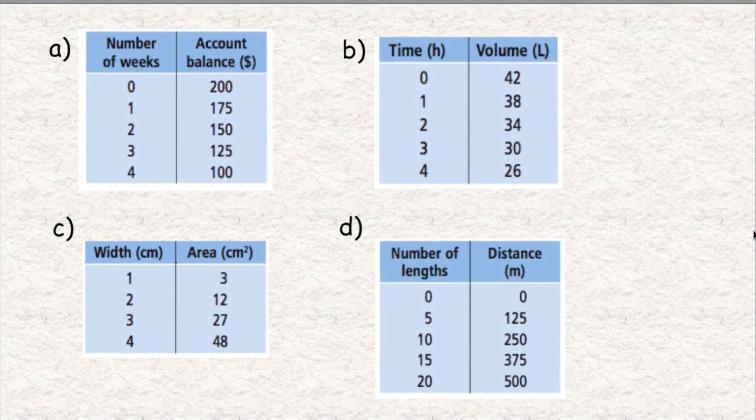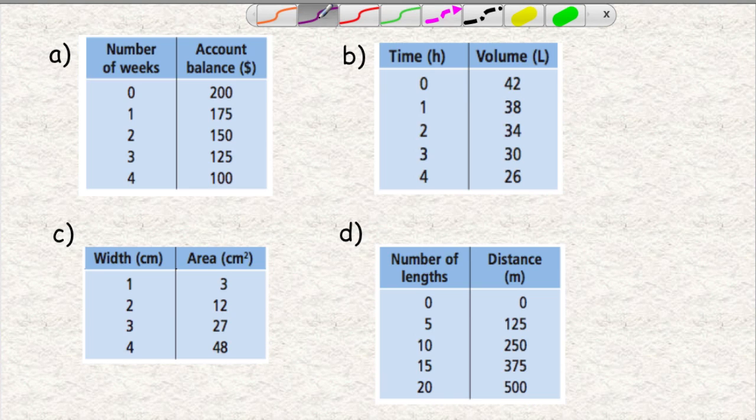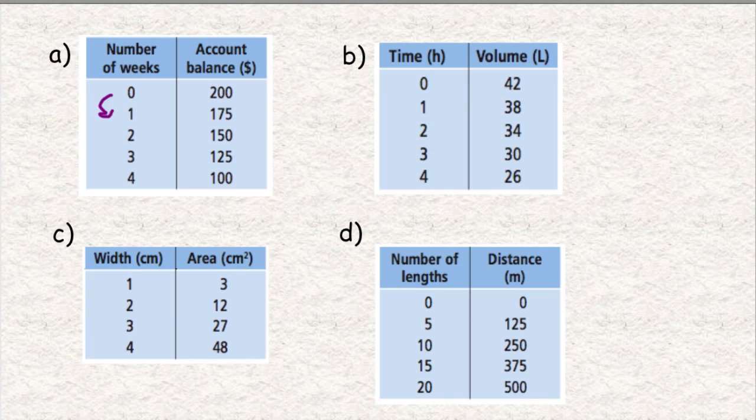So let's look at table A. Okay, first, just double check. Double check that all the values on the left side do go up by one every time. And in this case, they do. They go up by one every time. So we can just zoom in here on the right-hand side. From 200 to 175, that's a little bit different. That actually goes down, right? 200, 175 is getting smaller.